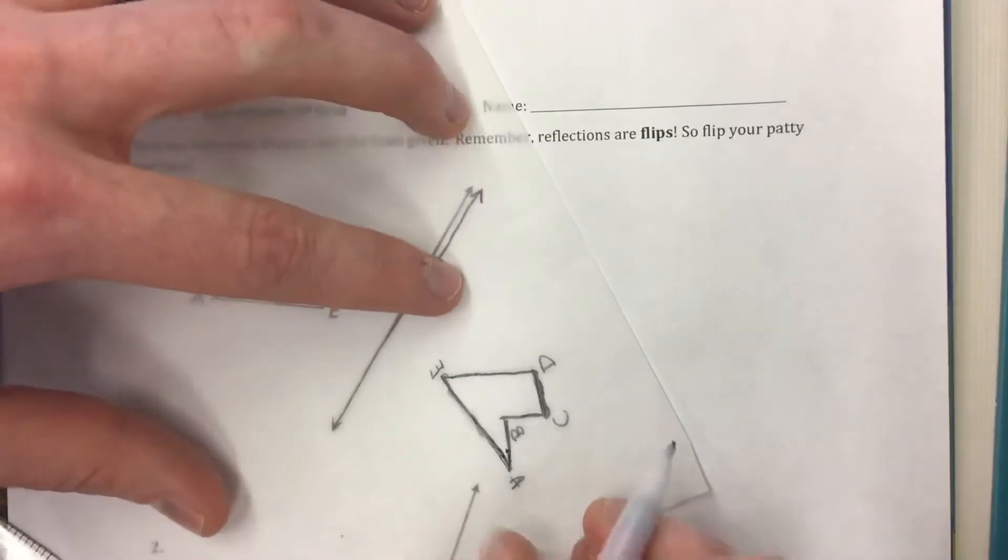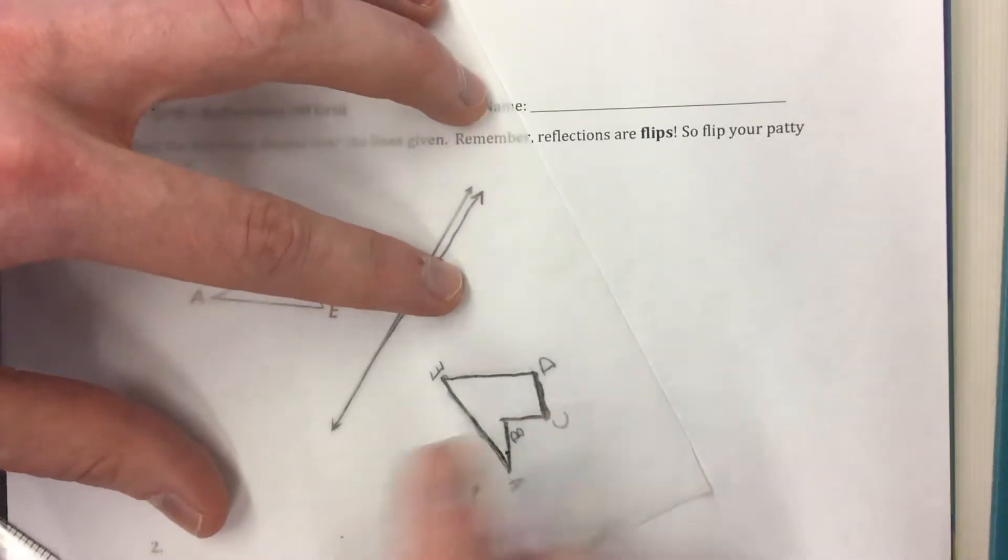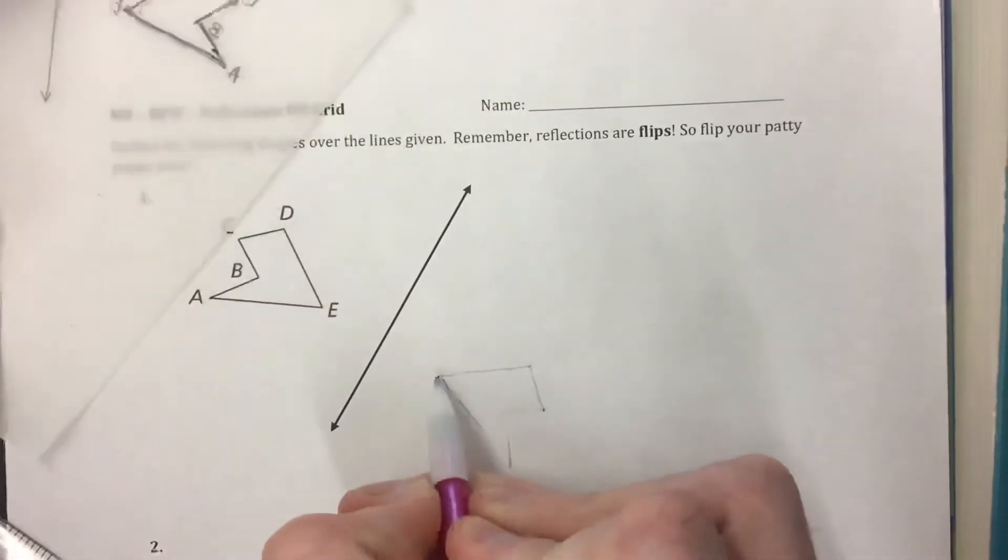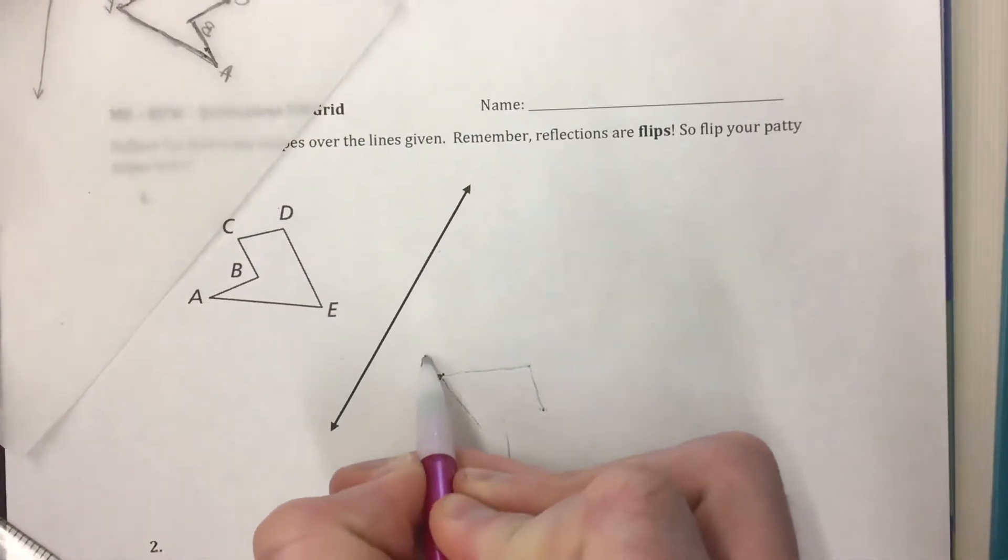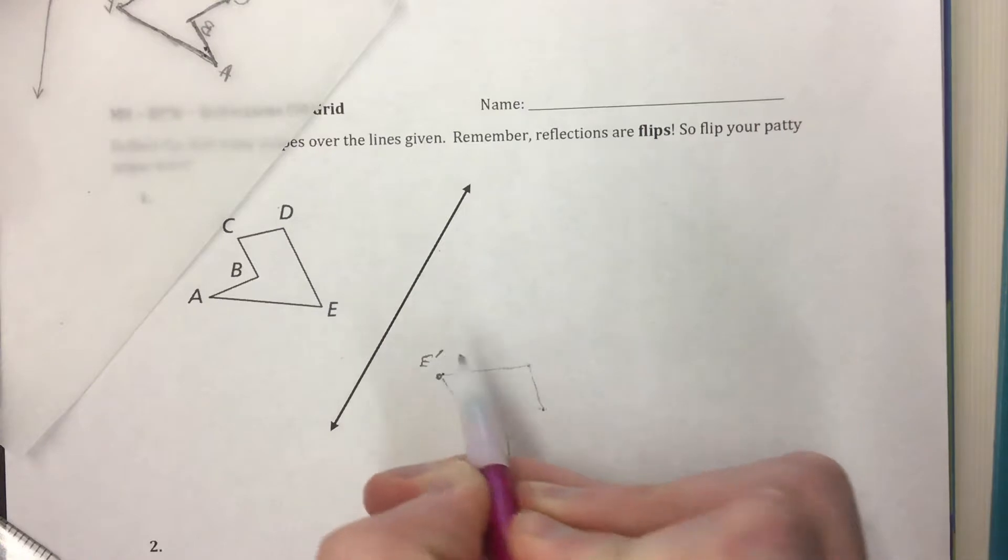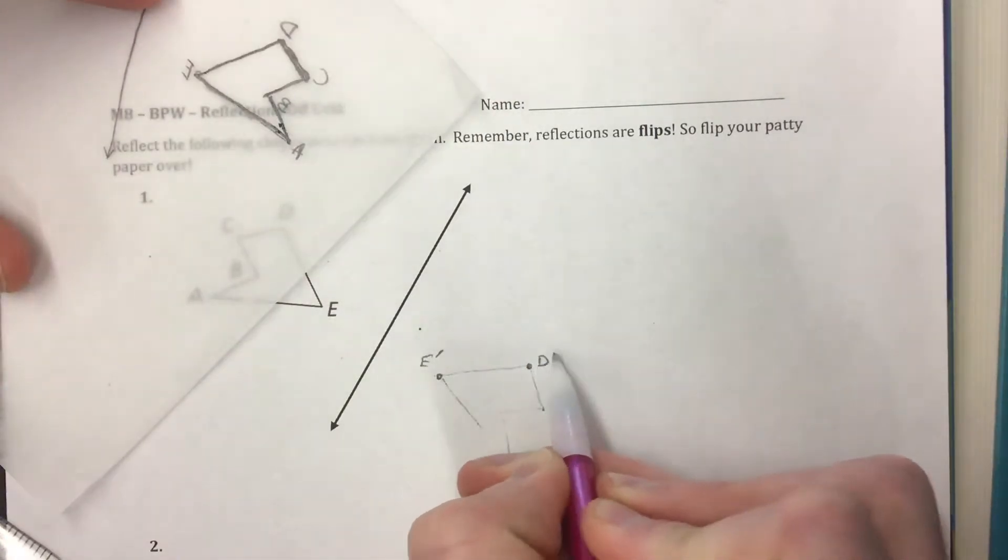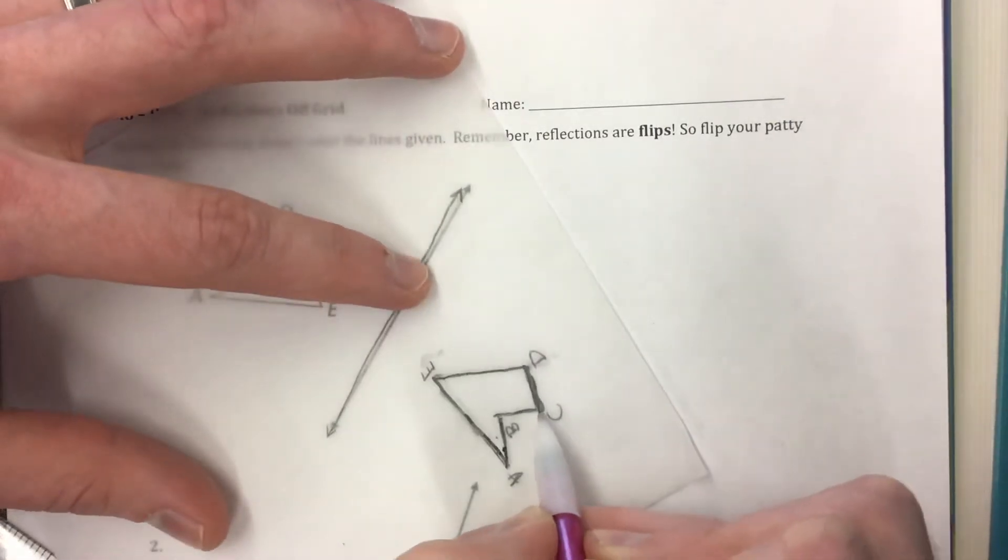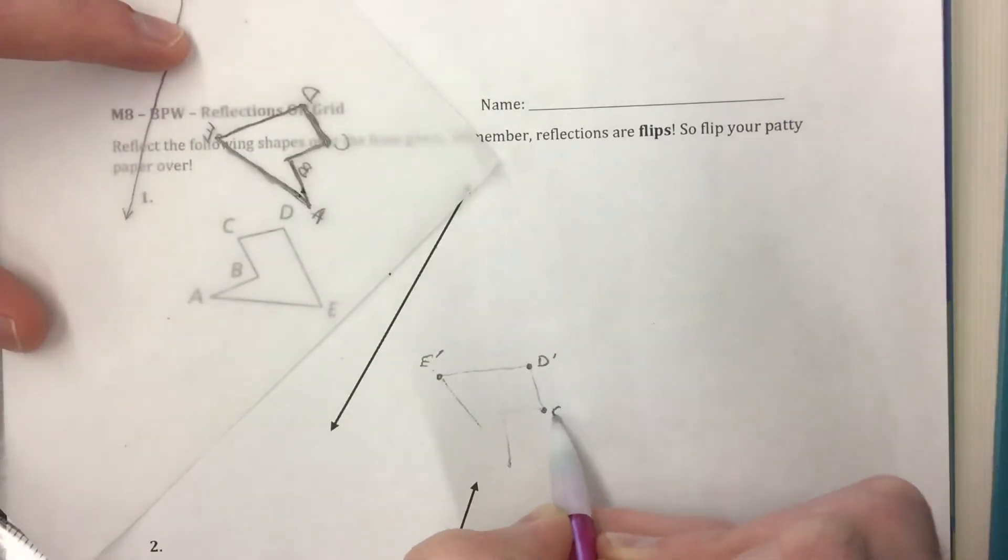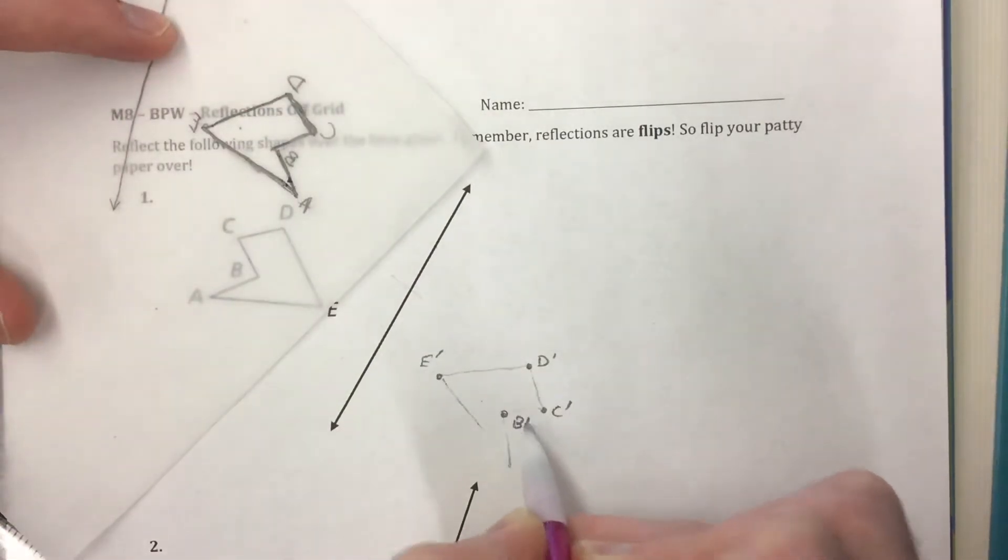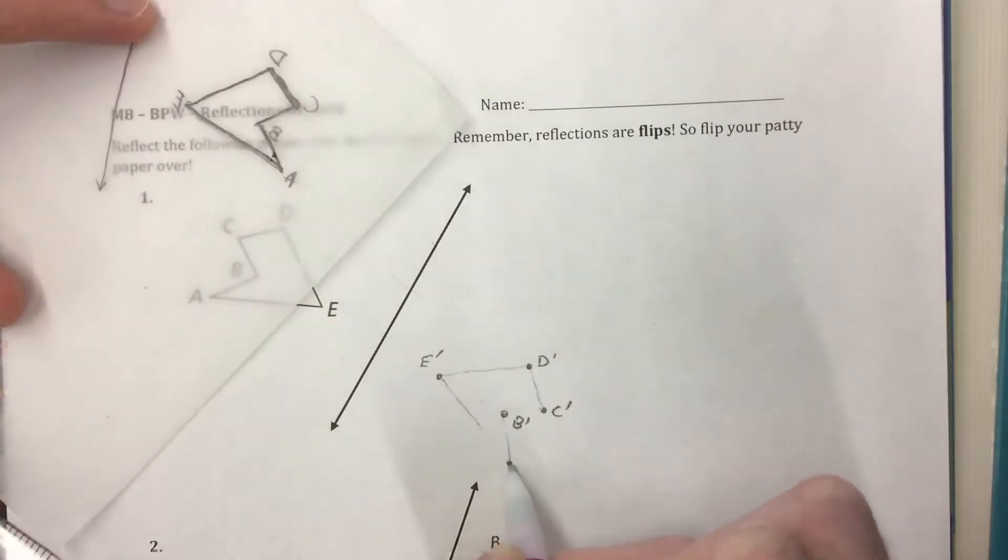The letters are very important to make sure that you label those correctly. So E, I got to make sure that's the closest one to the line. So this point right here would be my new E. We're going to call that E prime. And then D was over here so this is going to be point D prime. This point here was C so this is C prime. This is B prime. And then this is A prime.